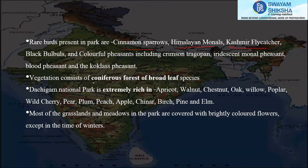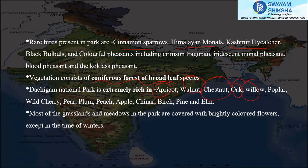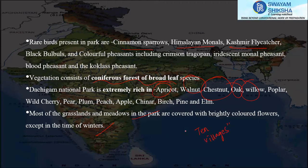The vegetation of Dachigam is coniferous forest with broad-leaf species. The park is extremely rich in apricots, walnuts, chestnuts, oak, and willow. Most grasslands and meadows are covered with brightly colored flowers except in winter. Notably, the name Dachigam literally means 'ten villages,' in memory of the ten villages that were relocated for the formation of this national park.